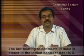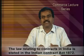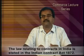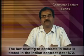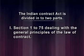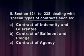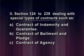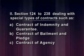Now let us proceed to see the contents of the Indian Contract Act. The law relating to contracts in India is stated in the Indian Contract Act 1872. The Indian Contract Act is divided into two parts: Sections 1 to 75 dealing with the general principles of the law of contract, and Sections 124 to 238 dealing with special types of contracts such as contract of indemnity and guarantee, contract of bailment and pledge, and contract of agency.